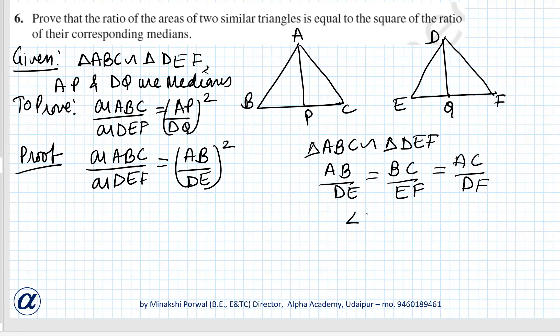Angle B equals angle E and angle C equals angle F because the triangles are similar. Now, BC and EF...